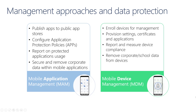For example, we can configure an application protection policy for the Outlook mobile application to prevent users from copying corporate data to applications that are not managed. You can also remove corporate or school data within mobile applications if needed. For applications that support both personal and corporate accounts, app protection policies will only apply to the corporate account on managed apps.